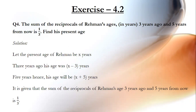The sum of the reciprocals of Rahman's ages in years three years ago and five years from now is 1 by 3. Find his present age. Let the present age of Rahman be x years. So three years ago his age was x minus 3 years, and five years hence his age will be x plus 5 years.